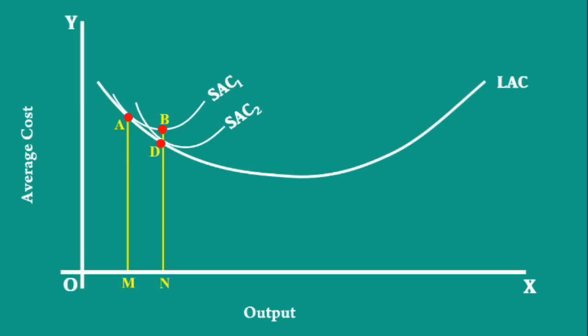What is true of this segment is true with all over the curve. Hence, the long run average cost curve takes a smooth flat bottomed U shape.